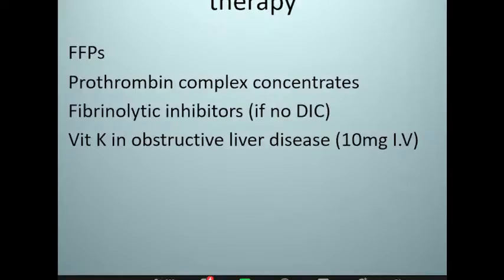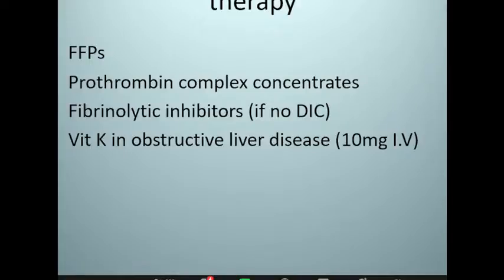We tend to avoid fibrinolytic inhibitors in DIC because if fibrinolysis is inhibited, whatever fibrin is formed will not be cleared — it remains within the microvasculature and causes more end organ damage. Where there is obstructive liver disease, it will cause vitamin K deficiency; we can give IV vitamin K — 10 milligrams daily for three days — to help minimize the hemorrhagic tendency seen in this disorder.